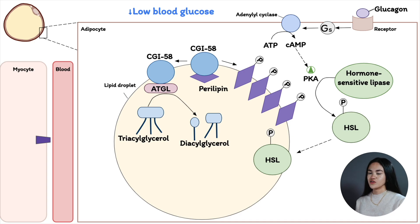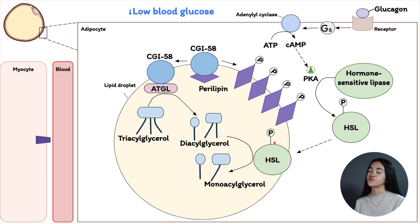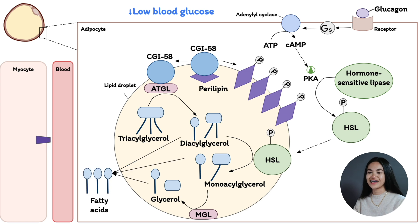From diacylglycerol, the phosphorylated perilipin interacts with hormone-sensitive lipase, which is also phosphorylated by protein kinase A. The hormone-sensitive lipase comes to the surface of the lipid droplet and converts diacylglycerol to monoacylglycerol. Then the monoacylglycerol is hydrolyzed by a third lipase called monoacylglycerol lipase. Now we have three fatty acids, and these fatty acids are going to leave the adipocyte and be transported in the blood.